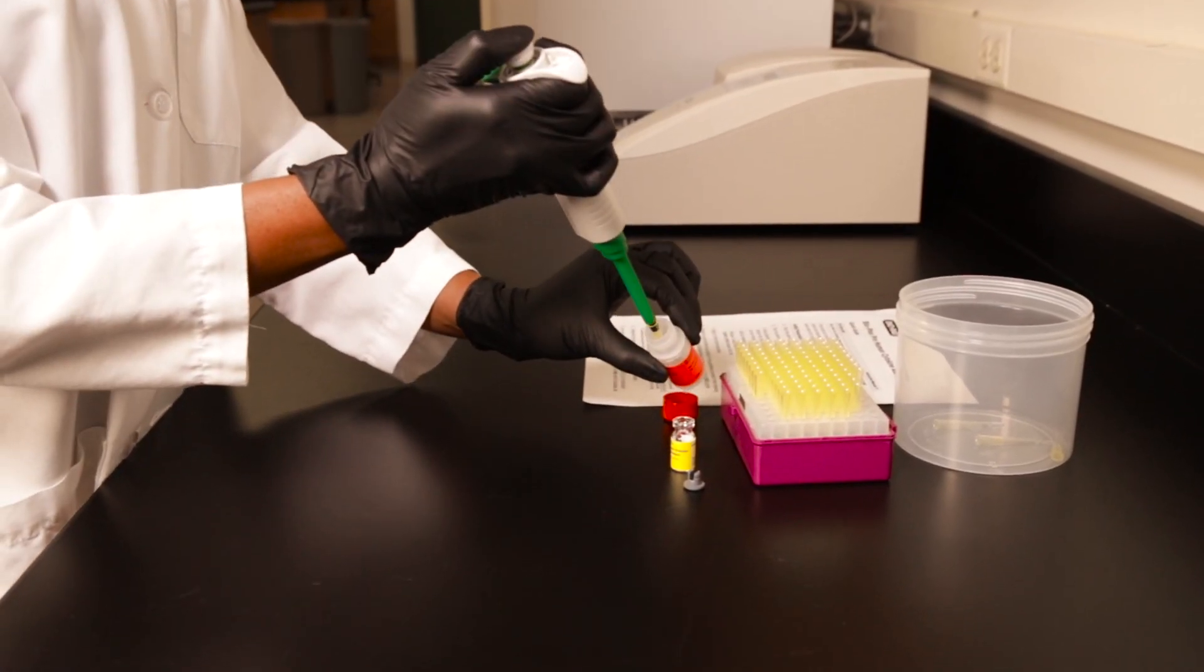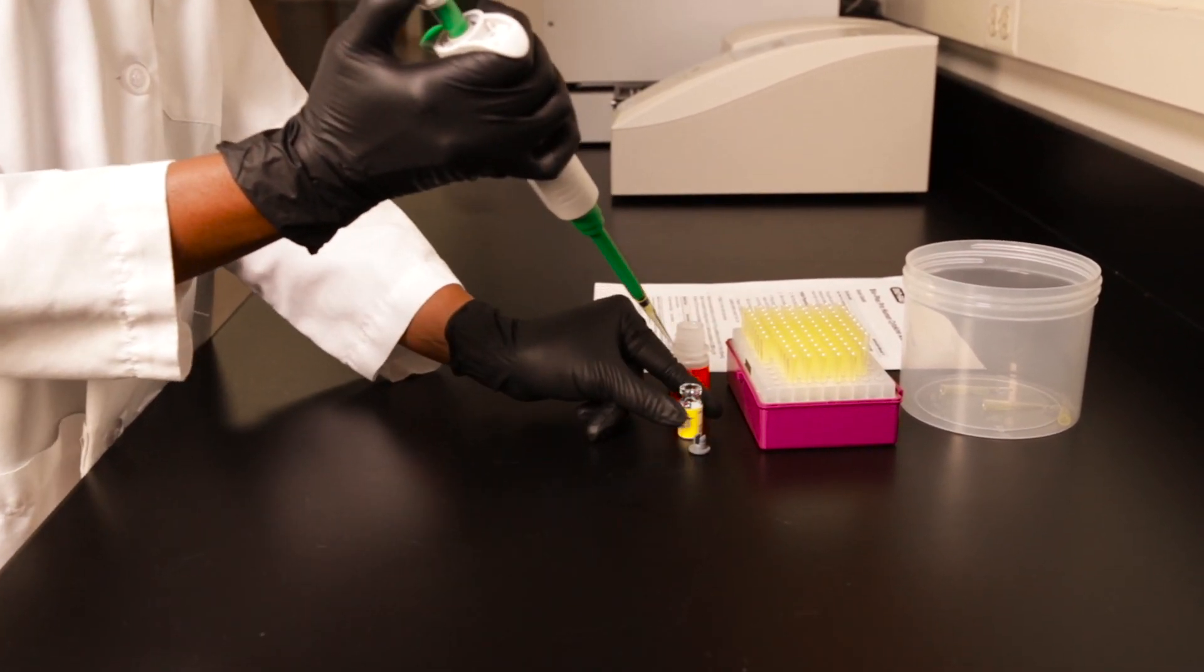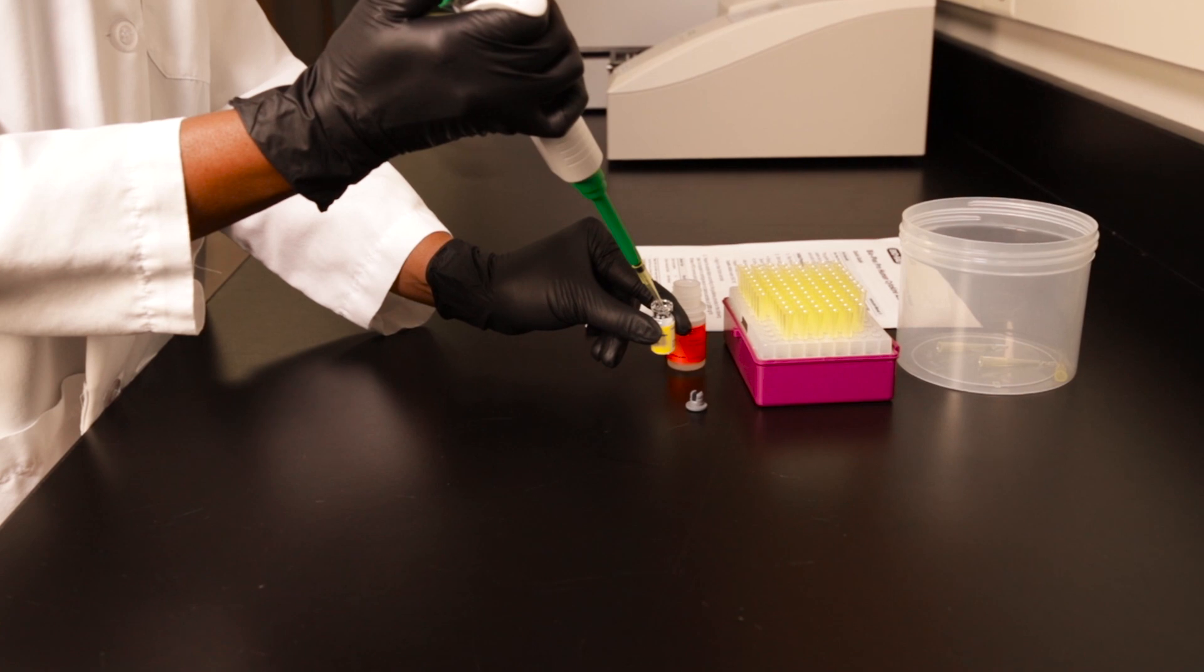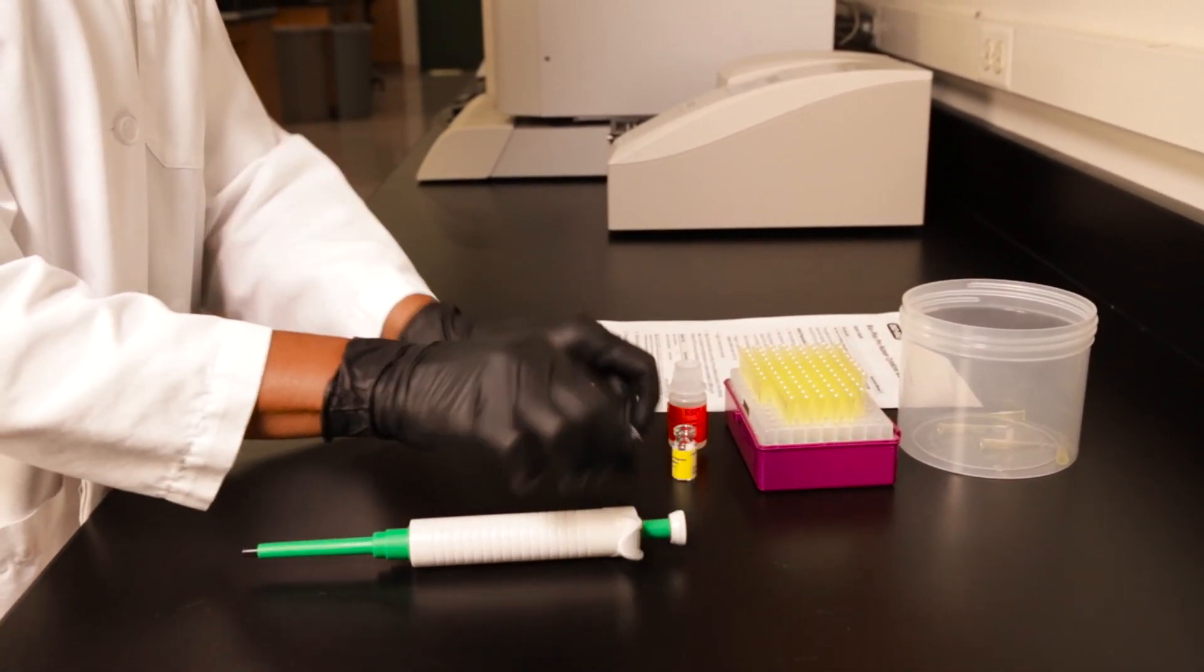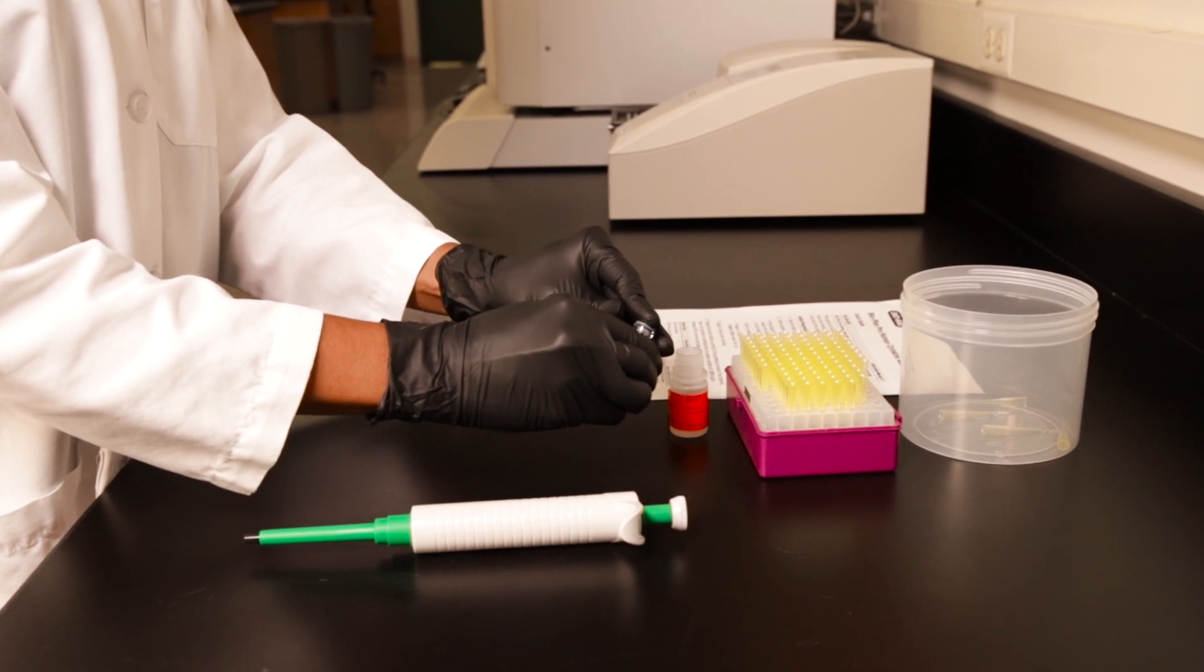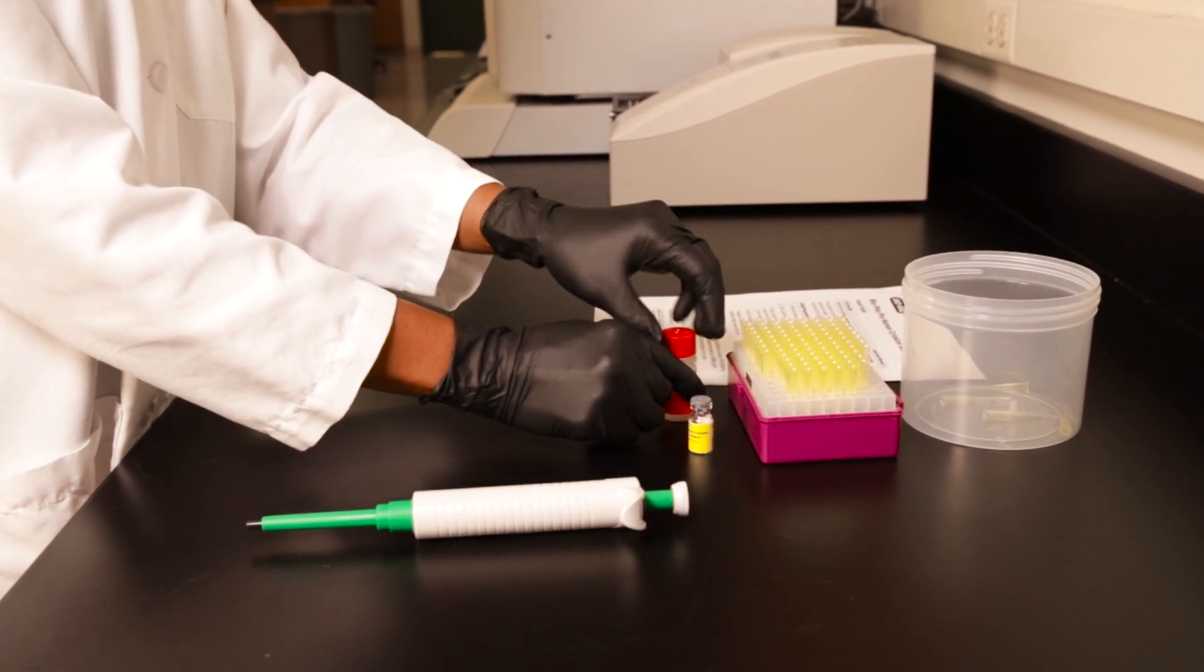The kit comes with standard diluent and sample diluent optimized for serum and plasma. For any other sample types, reconstitute the standard using a diluent similar to the sample. For example, when working with tissue culture supernatant samples, use the same cell culture media to reconstitute the standard.